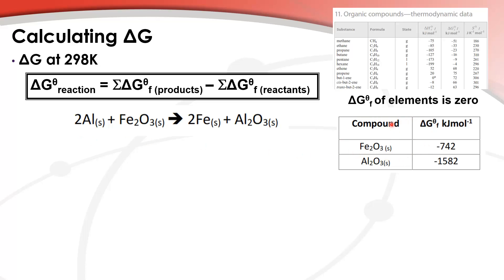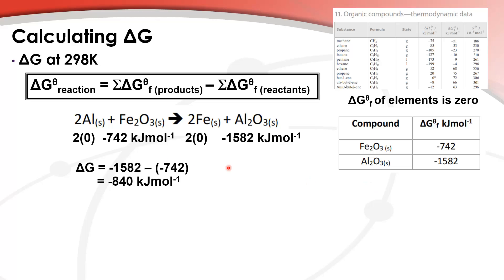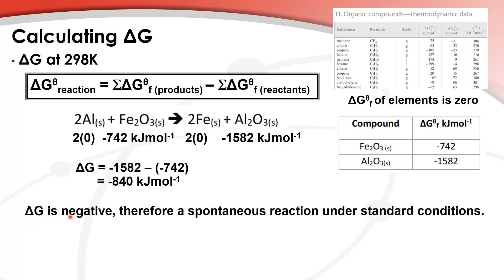Using the values from the table — aluminium and iron are elements, so their delta G of formation is zero. Iron oxide is negative 742 kJ/mol, and aluminium oxide is negative 1582 kJ/mol. Putting these into the equation gives negative 840 kJ/mol. Because delta G is negative, and delta G must be negative for a spontaneous process, this is a spontaneous reaction under standard conditions at 298 K.